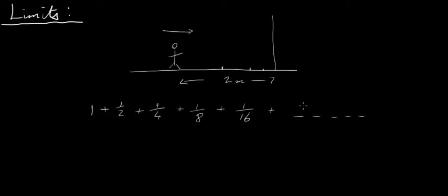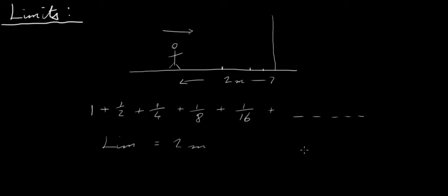If you continue that on indefinitely, theoretically he'll never actually reach the wall. But what we say is that he will effectively be so close to the wall that he'll have traveled two meters. So at the limit of this series — if we add up all these distances — the limit is two meters. That's the general idea of what limits are.